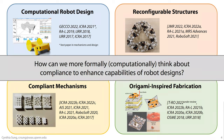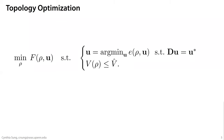Combining all these ideas, the big question we've been primarily interested in is: how can we more formally think about how we design compliance in order to enhance the capabilities of robot designs? I'm going to focus on a couple of papers where we've been thinking about these ideas.